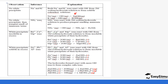Ammonium ions also form no precipitate, but ammonia gas — which has a pungent smell — is given off, forming ammonia gas and water. When barium, calcium and magnesium ions react with hydroxide ions in sodium hydroxide, they form white precipitates which are insoluble.